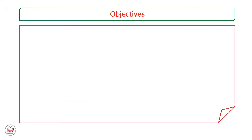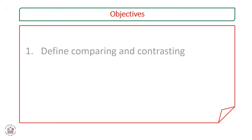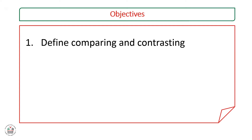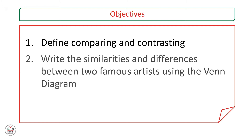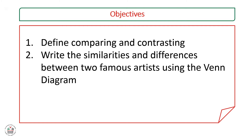We have two objectives. We will define comparing and contrasting. We will also write the similarities and differences between two famous artists using the Venn diagram.